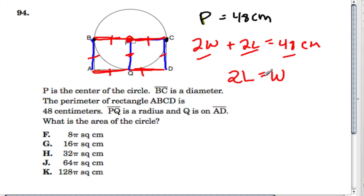So how does that help us? Well, we can use this to substitute into our equation right here. So 2W plus 2L, well, 2L is W, so now we have a simpler equation, and that equals 48 centimeters.